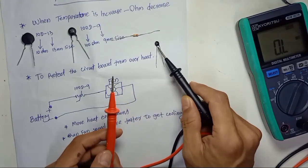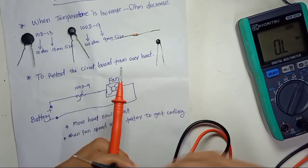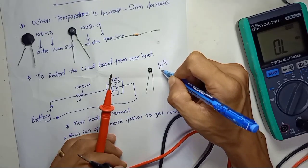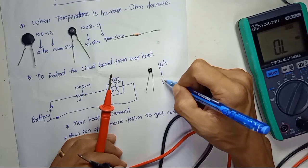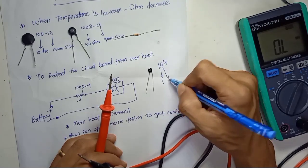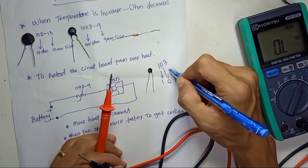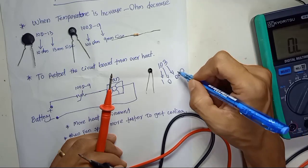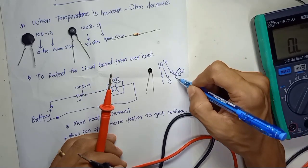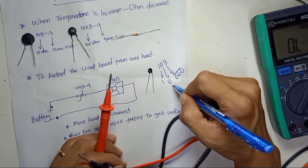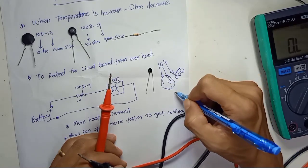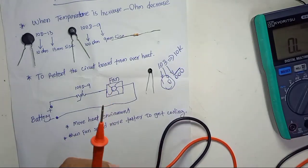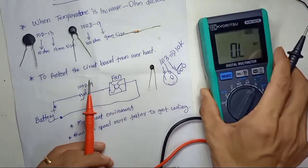By the way, I forgot to mention: this one is labeled '103'. The code 103 means: the first two digits are 10, the third digit 3 is the multiplier — 10 to the power of 3. So 10 × 1000 = 10,000 ohms, which is 10K. So a thermistor marked 103 equals 10 kilo-ohm.